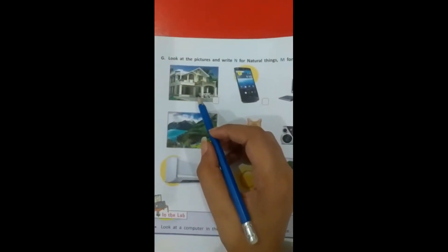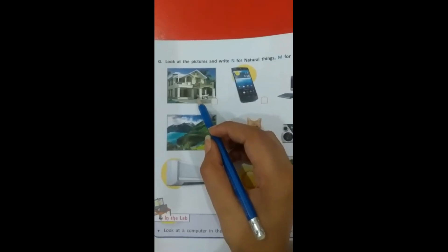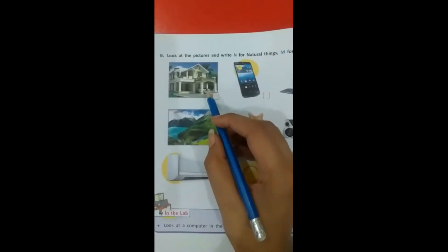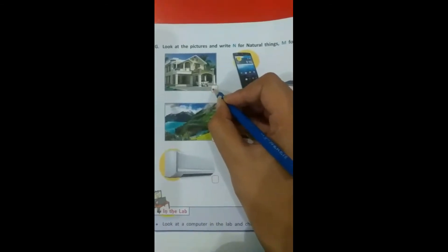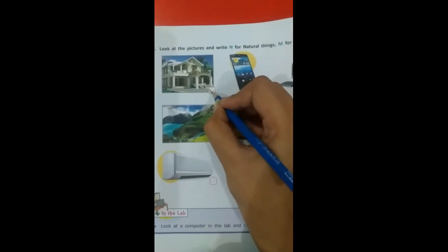If we look at the first picture, it is a house. The house is made by man, so we can write capital M.